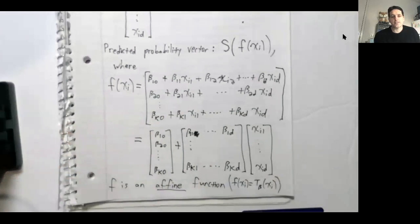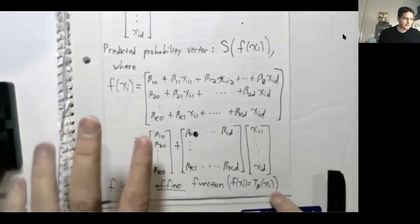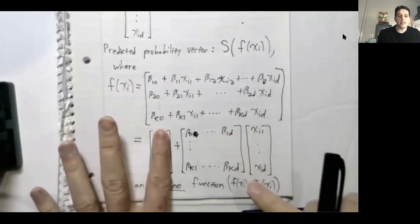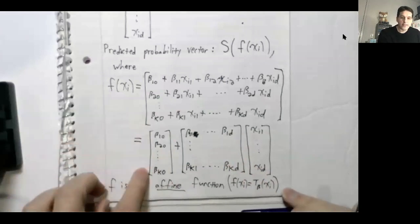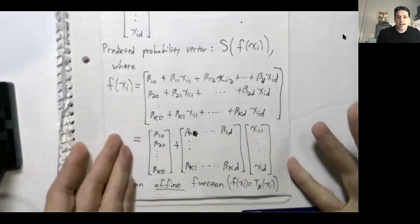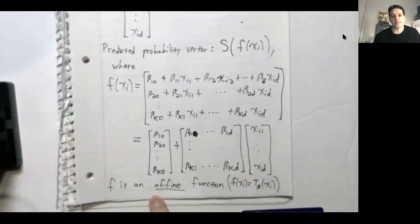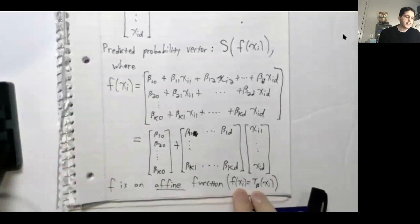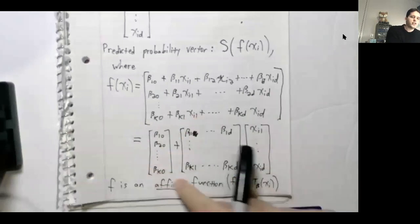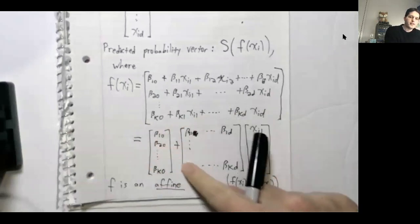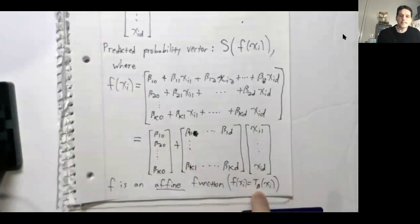It's not quite a linear transformation. If this added vector were zero, we would simply be multiplying by a matrix, which is a linear transformation. But since we're adding a vector, this is called an affine function. When we do multi-class logistic regression, f is an affine function. I'll use the notation f(xi) = T_beta(xi), where beta is a vector containing all the parameters that determine our affine function.